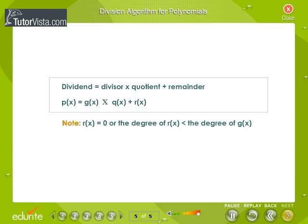Division algorithm for polynomials: Dividend is equal to divisor times quotient plus remainder.